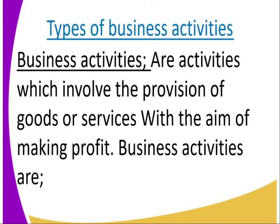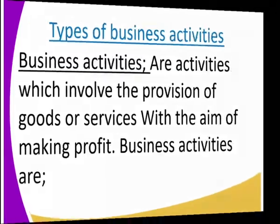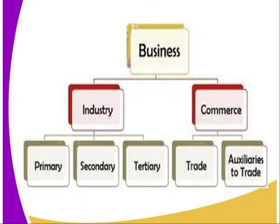Before I go to the types, let us look at the business activities. Business activities are activities which involve the provision of goods and services with the aim of making profit. All those activities that involve provision of goods and services are referred to as business activities, and these activities must have a vision of making profits. We have a number of them: industry, commerce, primary, secondary, tertiary, trade, and auxiliary of trade — all these are activities of business.